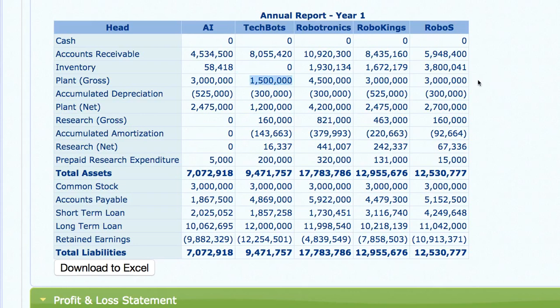Looking at plants: Tech Bots still has only one plant, Robotronics has three plants, while Robo Kings, Robo S, and AI have two plants each. Interestingly, the depreciation for Tech Bots and Robotronics is the same because both had only one plant until the end of quarter four. Robotronics added their two plants in the fourth quarter, which will be operational from quarter five.